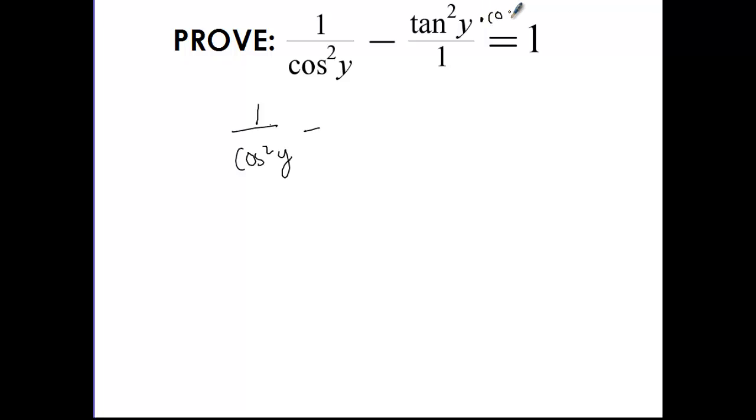I'm going to multiply the top and the bottom by cosine squared so that I can make common denominators. So I'm going to get tan squared y cosine squared y over cosine squared y.